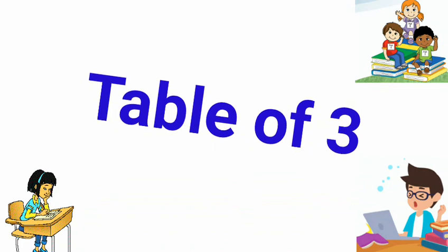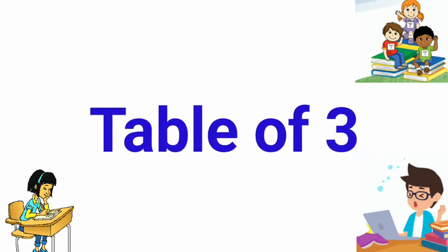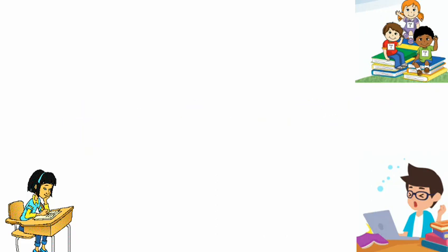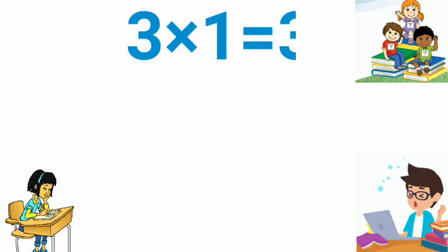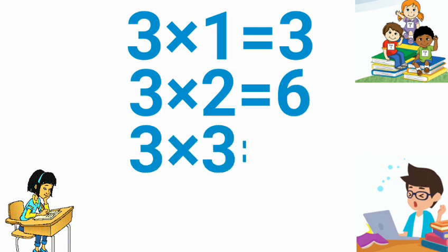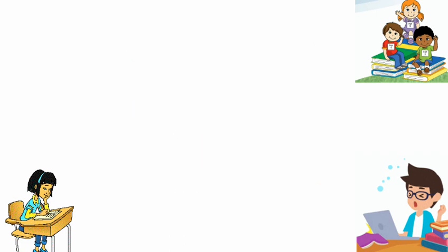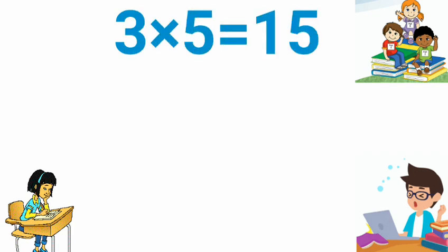Friends, let's start the table of 3. 3 1 is 3, 3 2 is 6, 3 3 is 9, 3 4 is 12, 3 5 is 15.